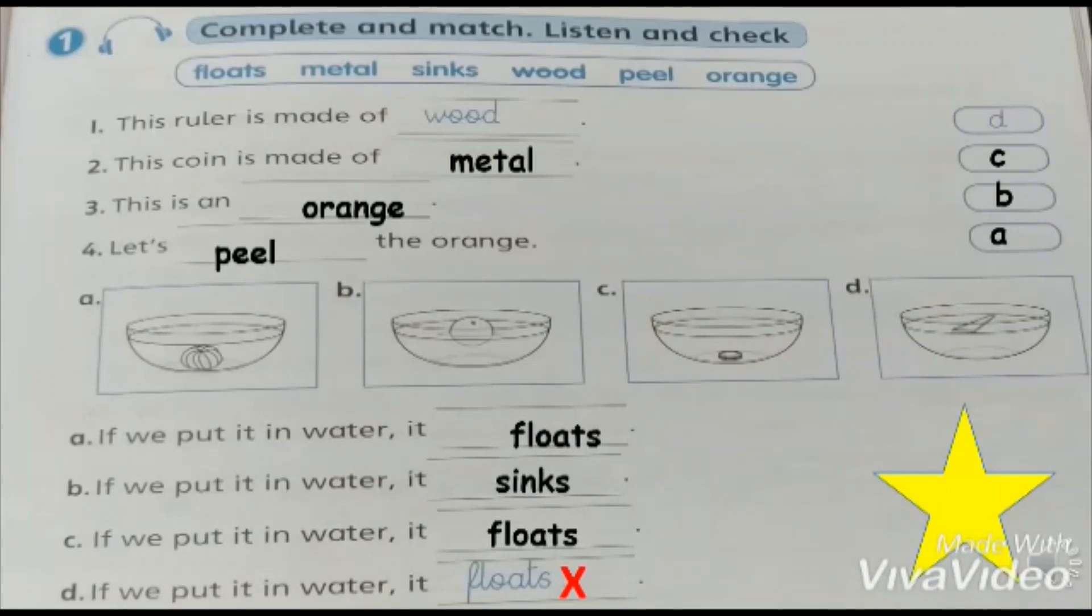Activity book page 57 unit 12 exercise 1. Complete and match. Listen and check. One, this ruler is made of wood. If we put it in water it floats. Two, this coin is made of metal. If we put it in water it sinks.